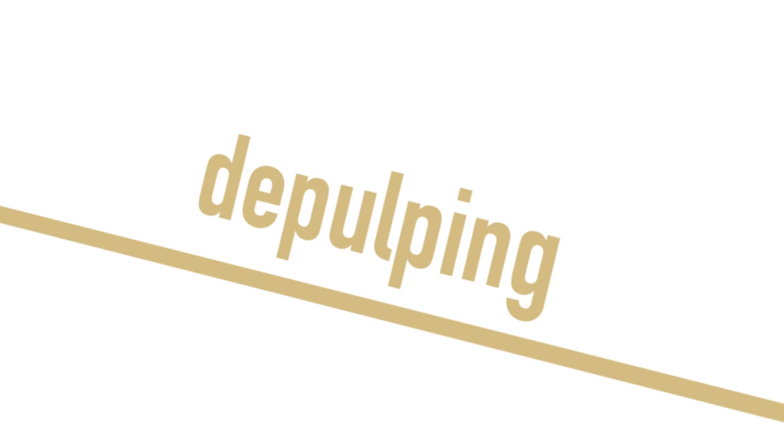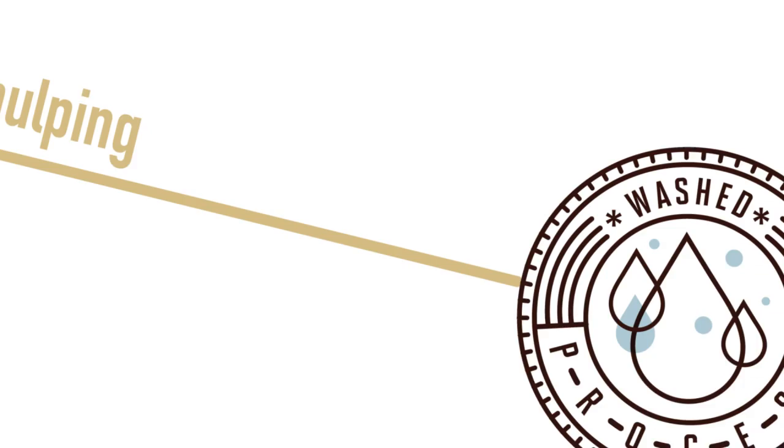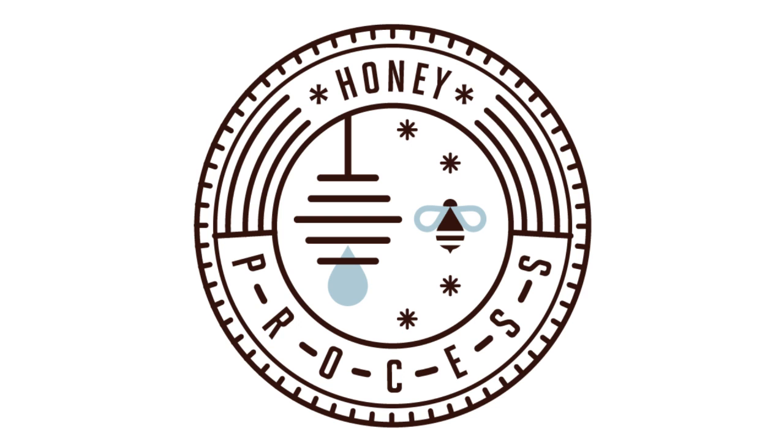Let's look at honey. Honey's kind of in the middle between the two. With the honey process, we also siphon, we also depulp, but then we dry right then, and we still have all the mucilage on. We're drying with the mucilage on.